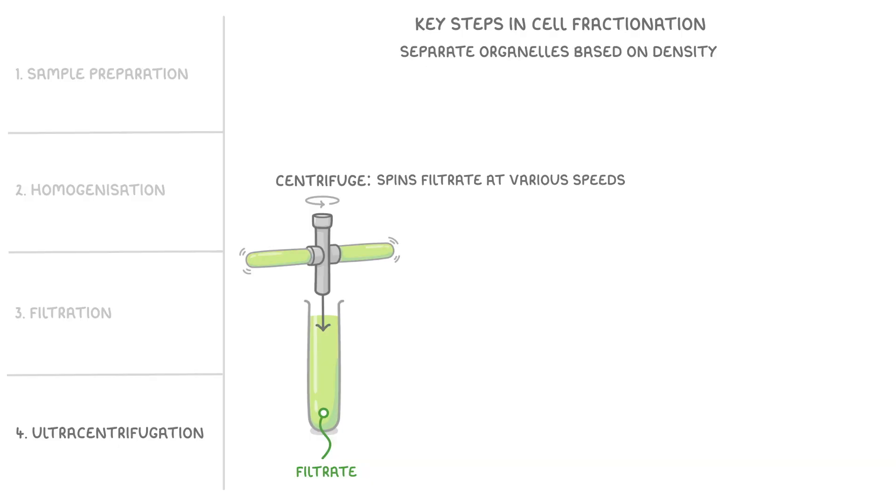To start we centrifuge the filtrate at a fairly low speed and as the solution spins the heaviest organelles which are typically the nuclei form a pellet at the bottom of the test tube. While all the lighter organelles remain in the liquid solution above the pellet which we call the supernatant.